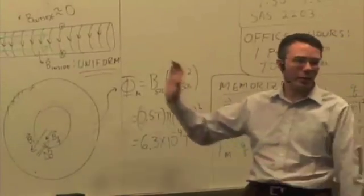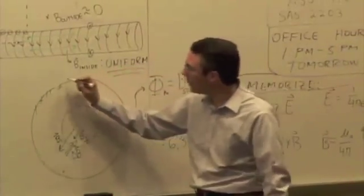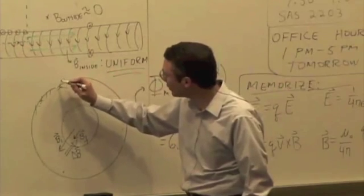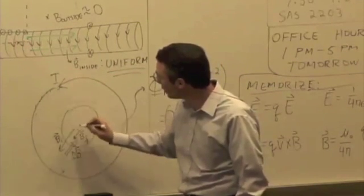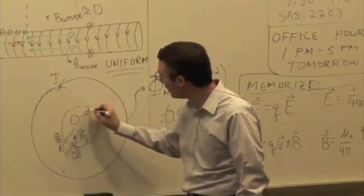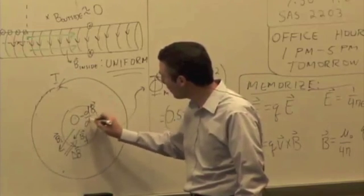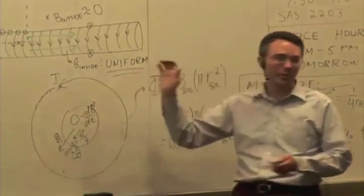And then from the right-hand rule, we would get a current, an electric field, a curly electric field and therefore also a current induced in this direction because negative dB/dt is out. Okay? We've done that before too.